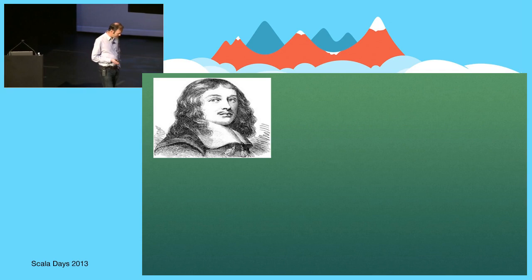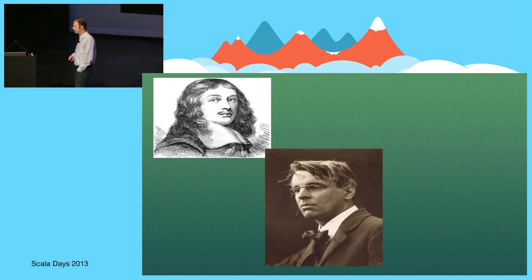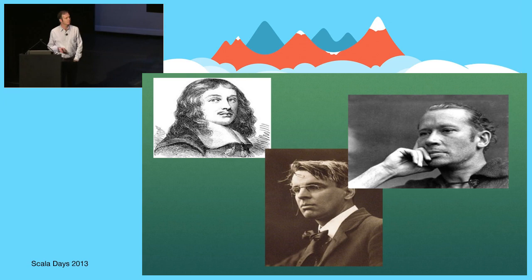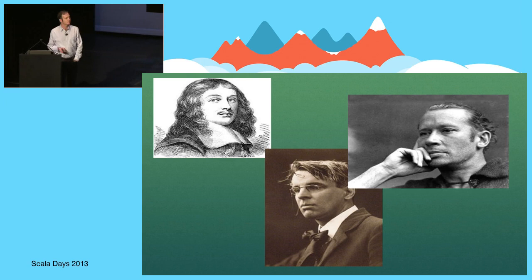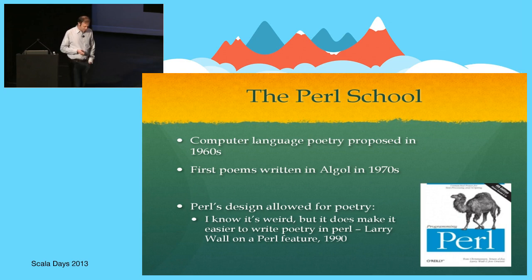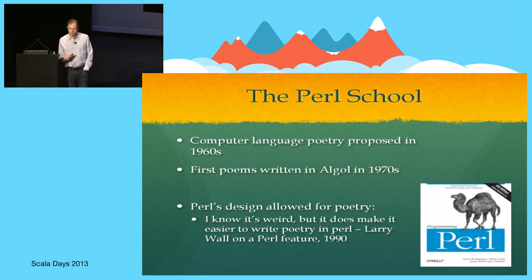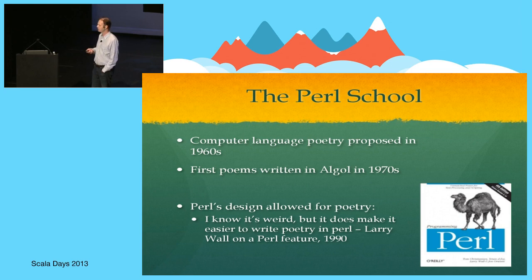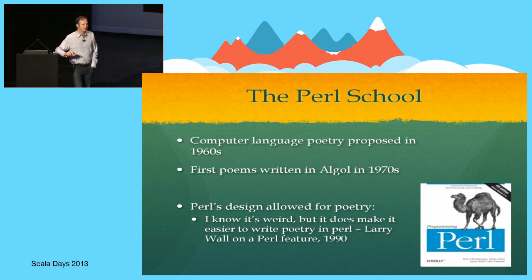I could have talked about some of my favorite schools of poetry, like the metaphysical school — John Donne, Andrew Marvell — perhaps 20th century poetry, W.B. Yeats, E.E. Cummings. But then I thought that to this audience, perhaps a more relevant school of poetry would have been the Perl school. The idea of writing poetry in programming languages was first proposed in the 60s. As languages evolved to be higher level and more natural, people started trying in the 70s in languages like Algol.